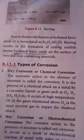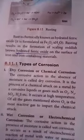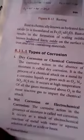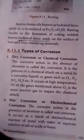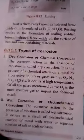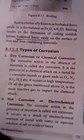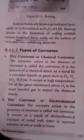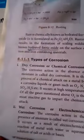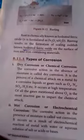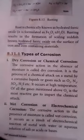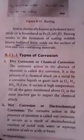Types of corrosion. First, dry corrosion or chemical corrosion: the corrosive action in the absence of moisture is called dry corrosion. It is the process of chemical attack on the metal by corrosive liquids or gases such as oxygen, nitrogen, sulfur dioxide, hydrogen sulfide, etc. It occurs at high temperatures; of all gases mentioned, oxygen is the most reactive.